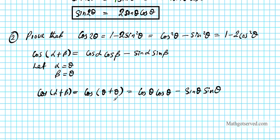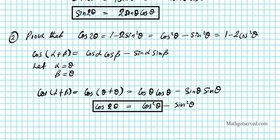Combining these two thetas on the left gives cosine two theta, because we're adding one theta plus one theta. On the right, cosine times cosine becomes cosine squared theta, and sine times sine becomes sine squared theta. So we have cosine two theta equals cosine squared theta minus sine squared theta. We have derived the first double angle identity for cosine — the middle one is proven.